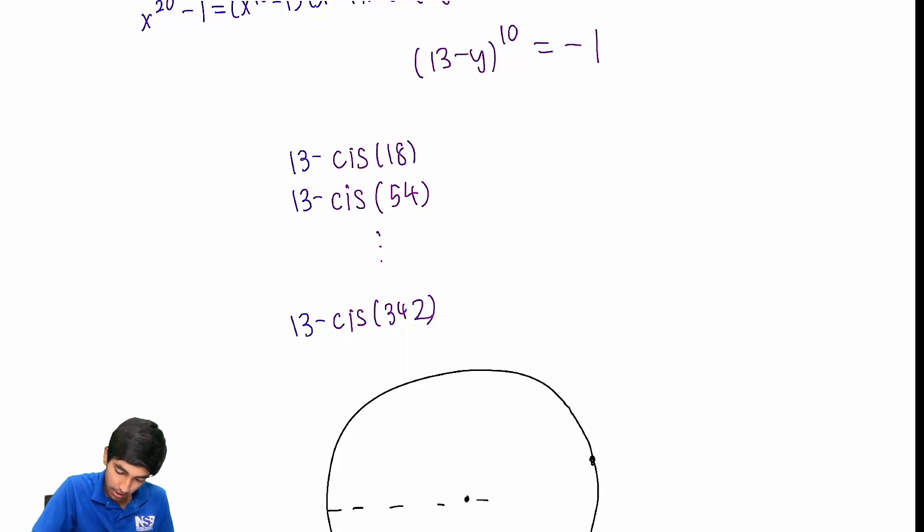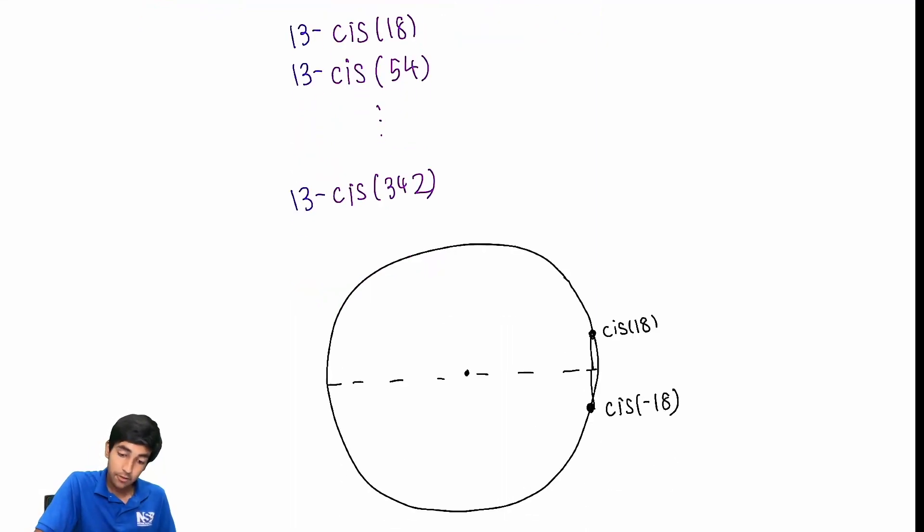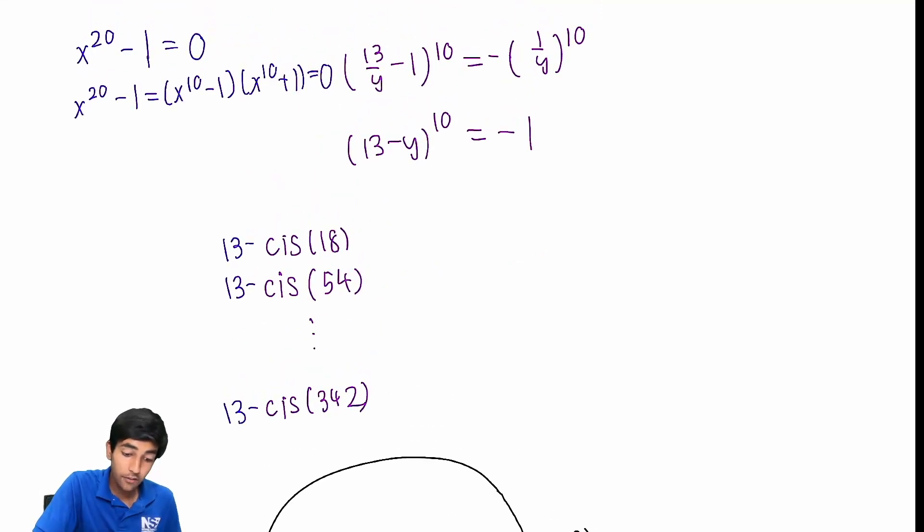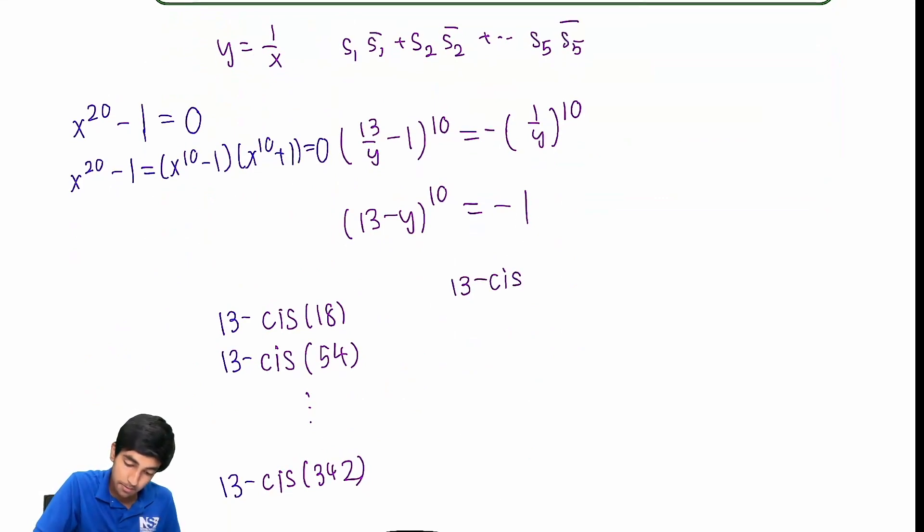So now, let's just say cis of 18. It's going to be something like this. This is our x-axis, this dotted line. This point is, let's say, cis 18. Now, this point over here is going to be its conjugate, because it's going to have an imaginary part that's negative of the imaginary part of cis 18. Notice that it's just cis of negative 18. And in general, that's true always. If this is cis of theta, this conjugate is going to be cis negative theta. Therefore, what we're looking for is this thingy, right? We're really just looking for 13 minus cis 18, 13 minus cis 342.